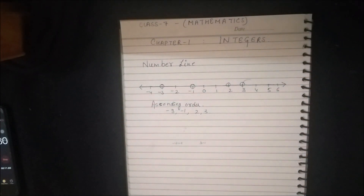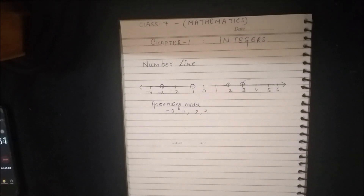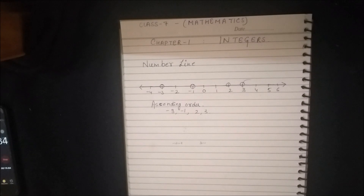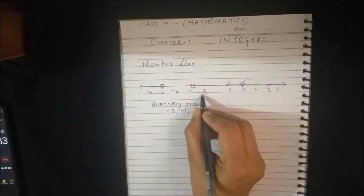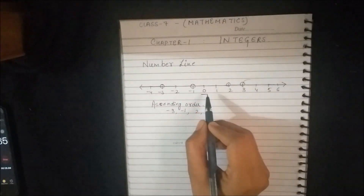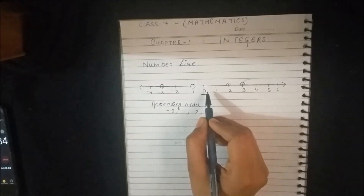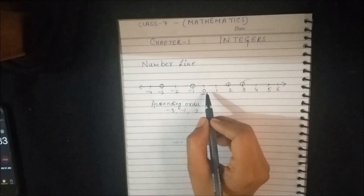We have learnt about whole numbers and integers in Class 6. We know that integers form a bigger collection of whole numbers and negative numbers, which contains positive natural numbers, negative natural numbers, and 0 as well. 0 is neither negative nor positive.